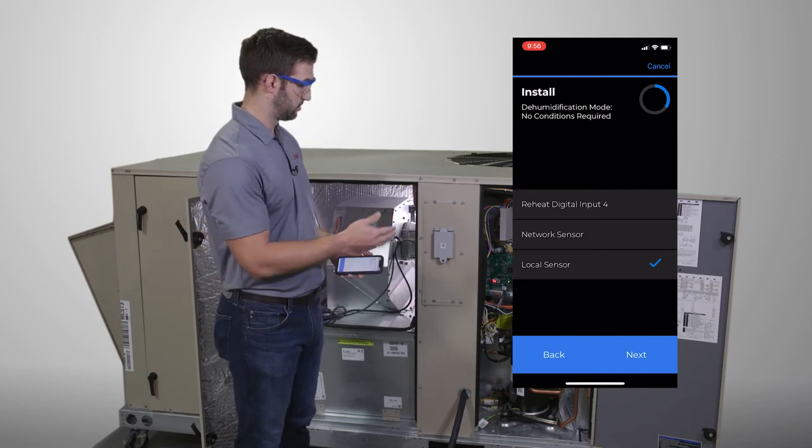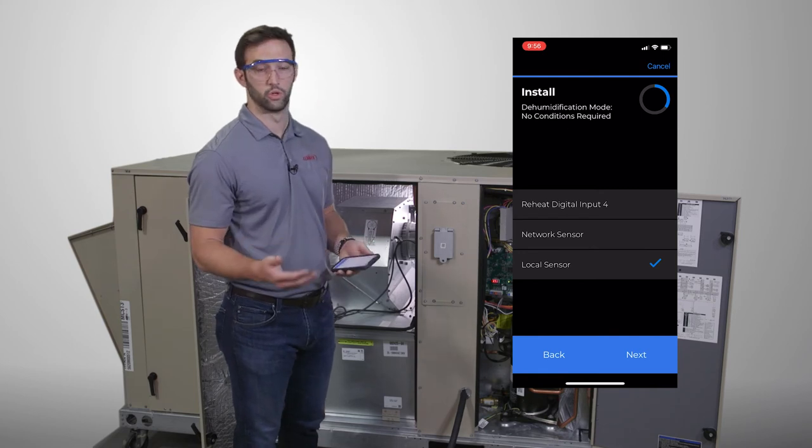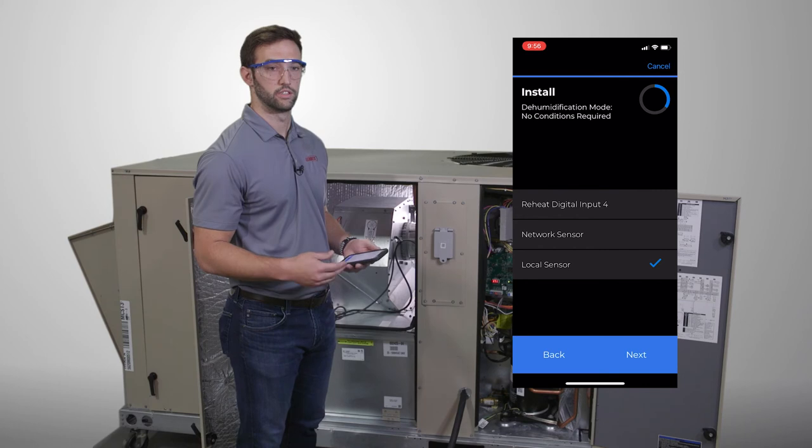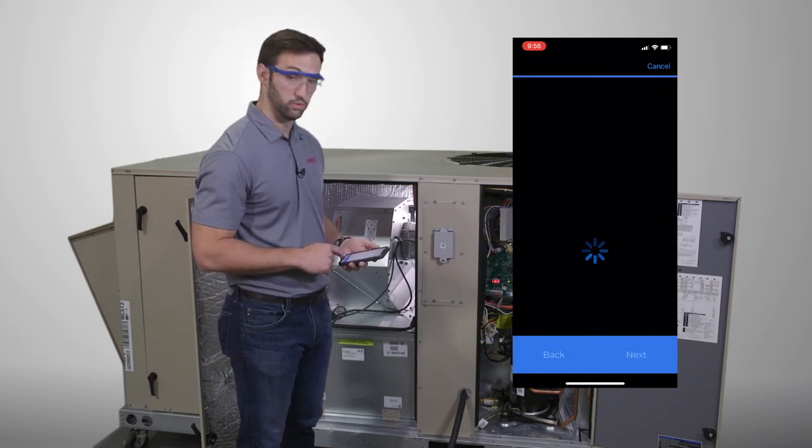So your options are your DI4 for 24 volt controls. You'll have your network sensor or local sensor that can be a 0 to 10 volt or that can be a CS8500, something like that, that provides that value to the core controller.